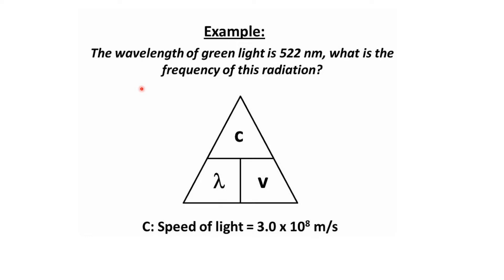Let's look at a practice question: the wavelength of green light is 522 nanometers — what is the frequency of this radiation? Using ν = c/λ, where c = 3.0 × 10⁸ m/s, we need to convert 522 nm to meters first. The answer will be in units of per second (Hz). You can try calculating this yourself.